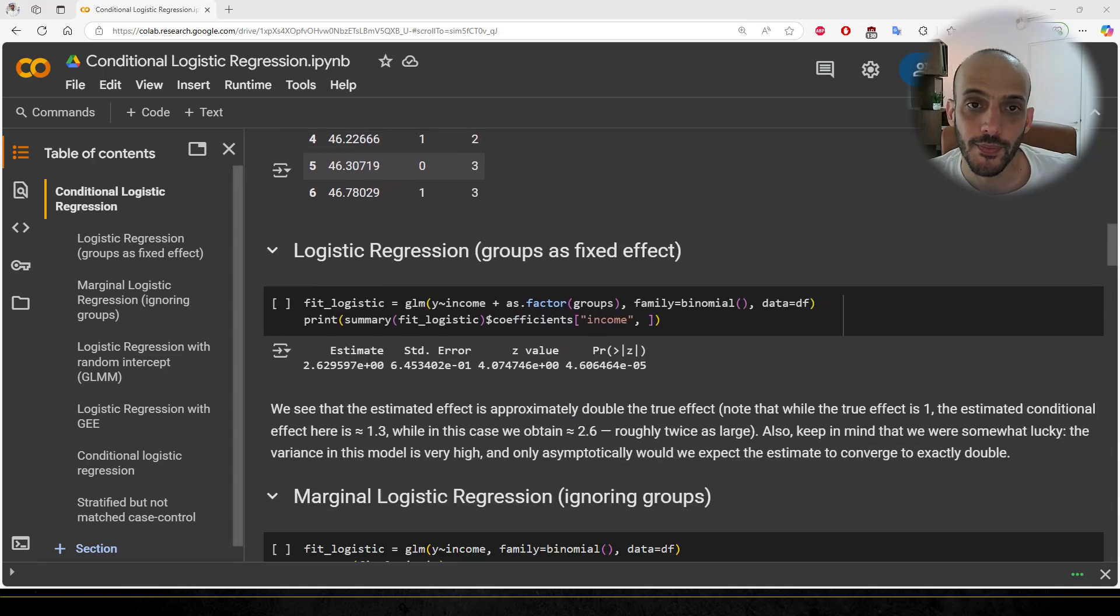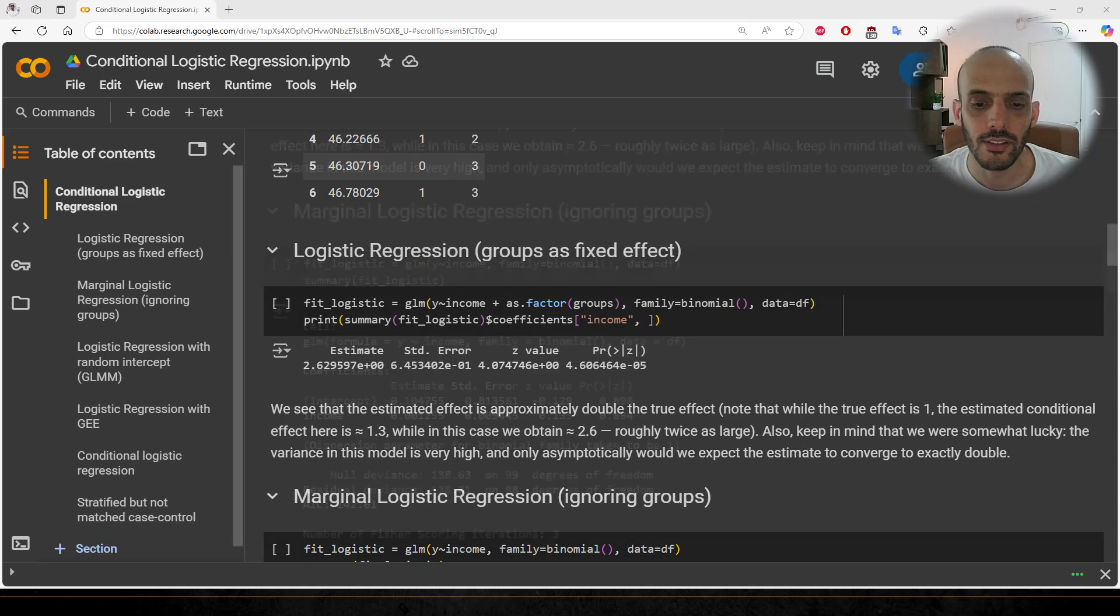The first model we'll fit is a regular logistic regression, treating the groups as fixed effects. You can see that when running a binomial GLM, the estimated beta coefficient is more than double the true effect. Note that we happen to get lucky here. The estimate is almost exactly twice the estimated conditional effect as we will see later. But the variance is very high. And so running this with different data or using a different seed would likely produce wildly different results.